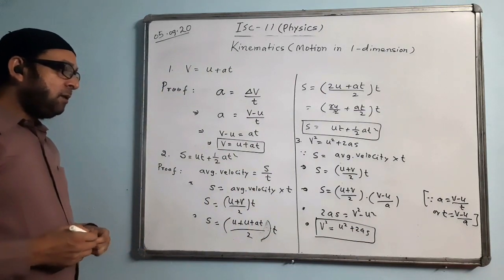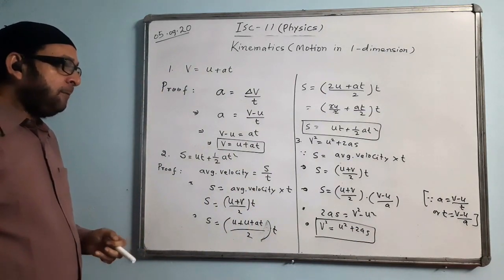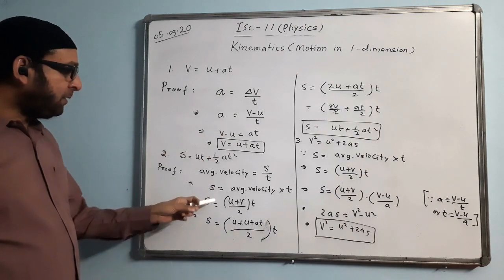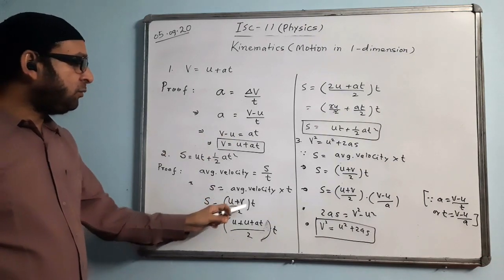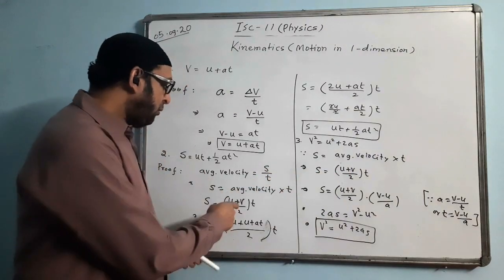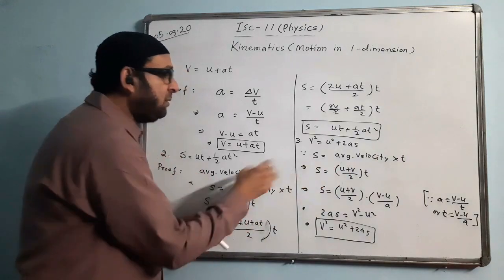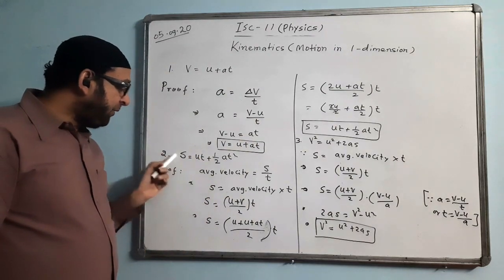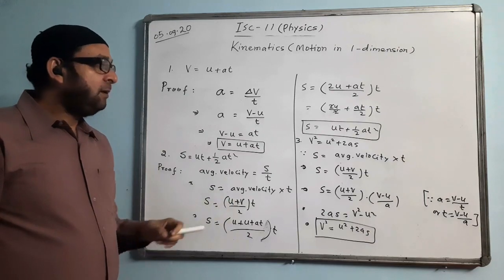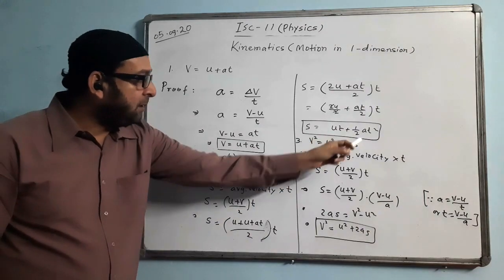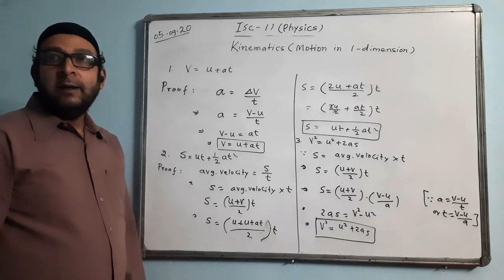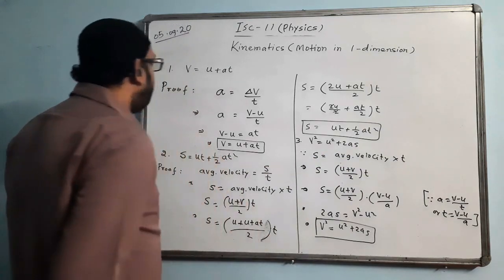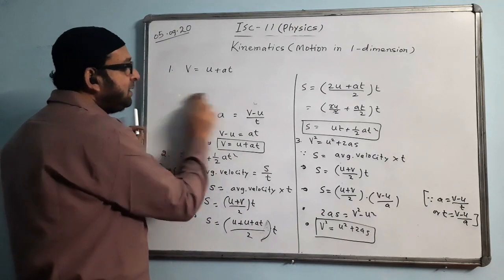The key steps for proofs 2 and 3 are common — both start with s = [(u + v)/2] × t. For formula 2, we don't have v in the result so we substitute v = u + at. For formula 3, we don't have t in the result so we substitute t = (v − u)/a. The rest follows easily.